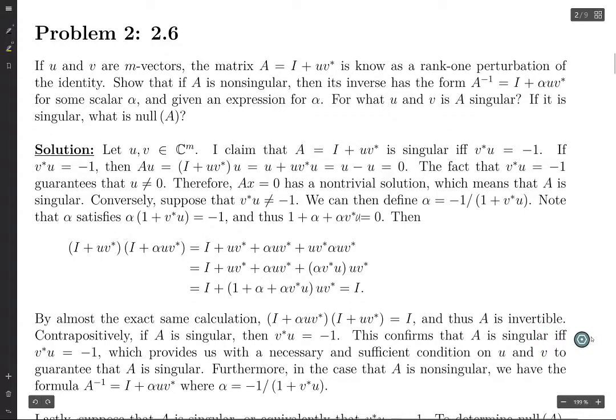So if V star U is not negative 1, then A is not singular. And contrapositively, if A is singular, then V star U equals negative 1. And so that's the reverse direction here. Therefore, A is singular if and only if V star U equals negative 1.